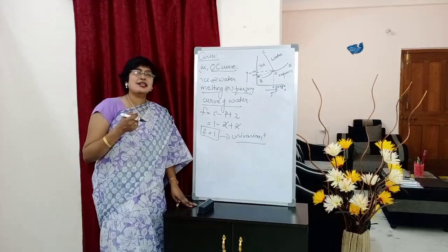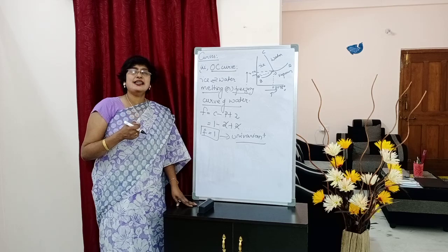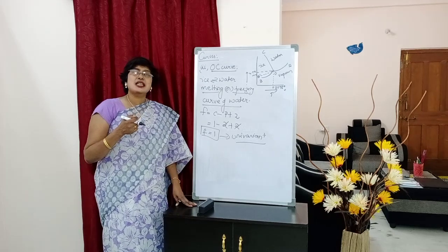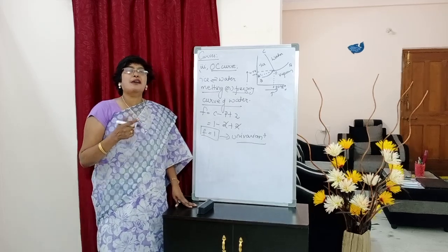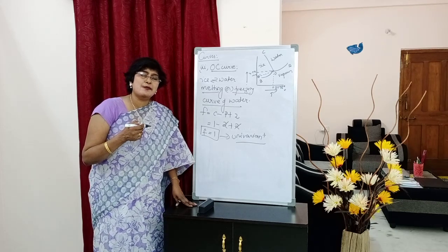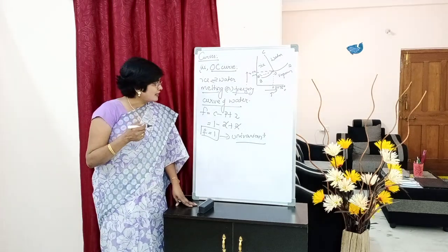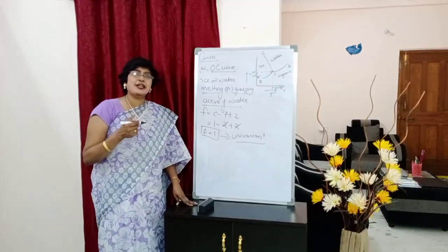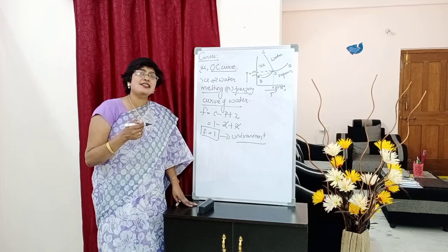Along OC curve, ice and water exist in equilibrium with one another. It is also called the melting or freezing curve of water. From F = C - P + 2, we get F = 1. Hence OC curve is univariant — either temperature or pressure can be changed without changing the number of phases present at equilibrium.